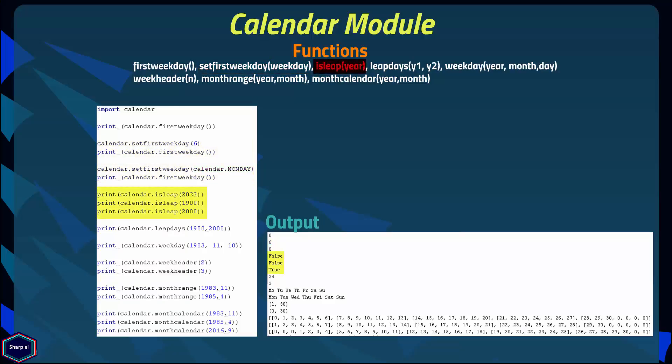The isleap() function takes a year as an argument and returns true or false depending on whether the year is a leap year. Another very similar function is leapdays(), which takes two arguments that must be valid years and returns the number of leap years between those years.